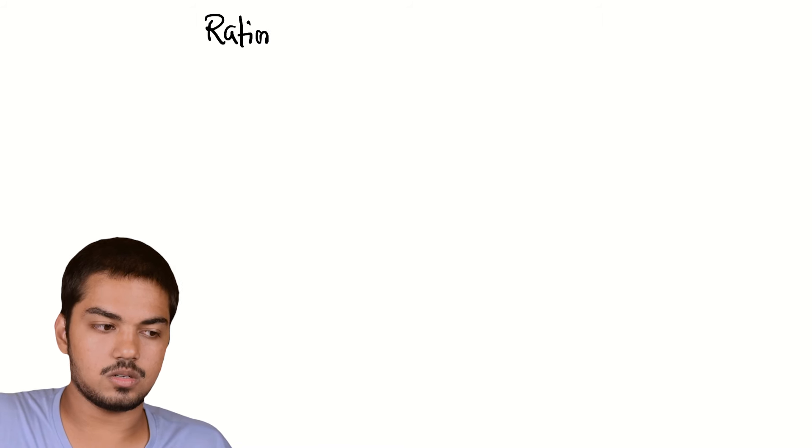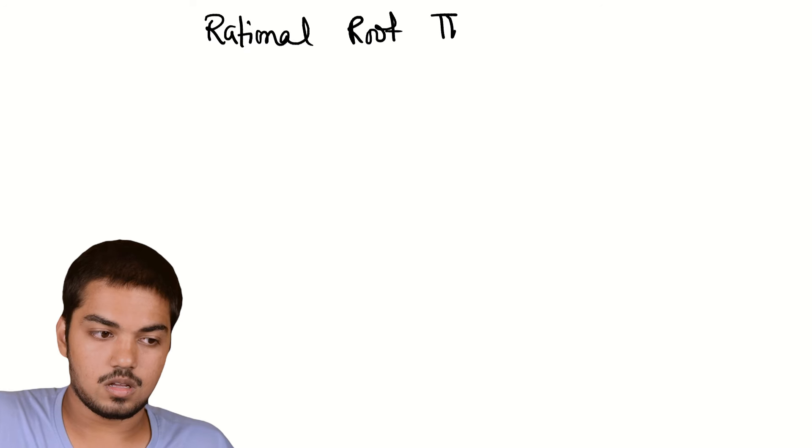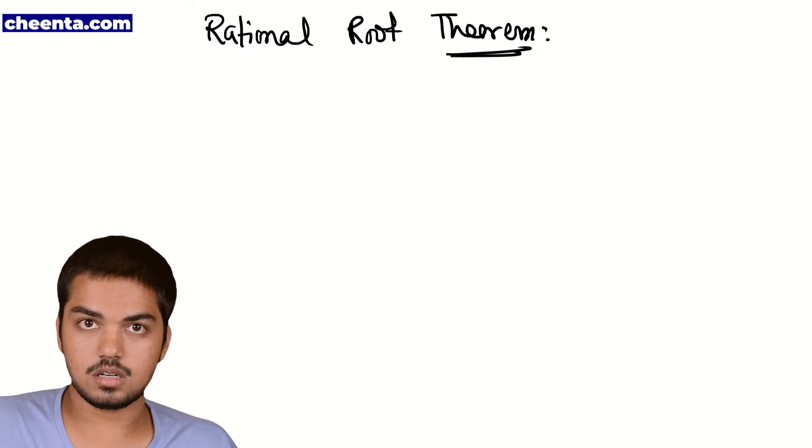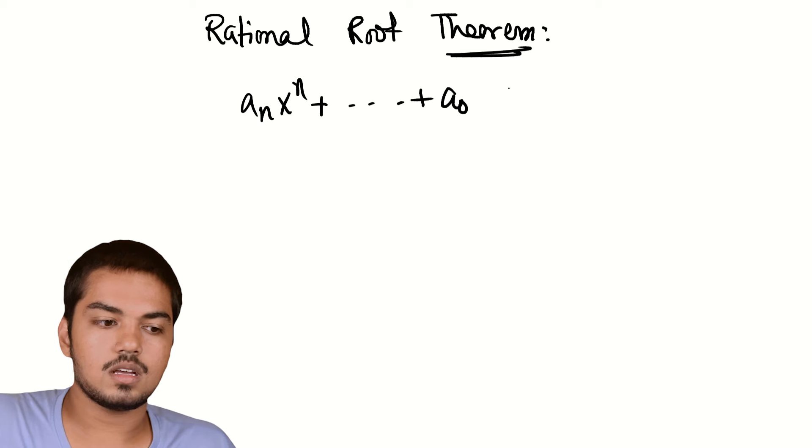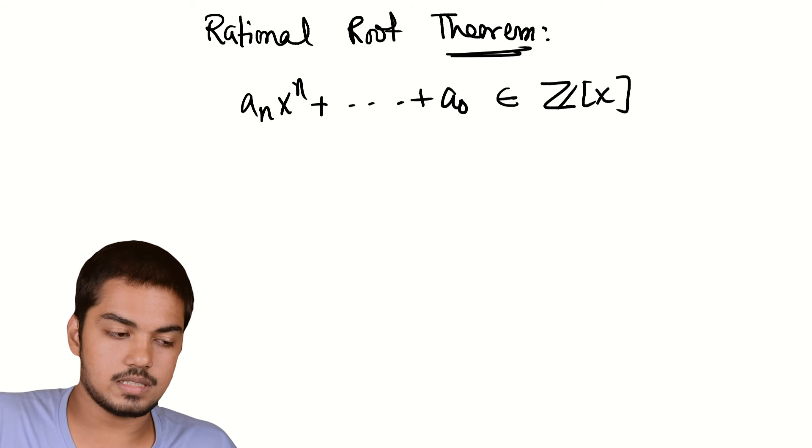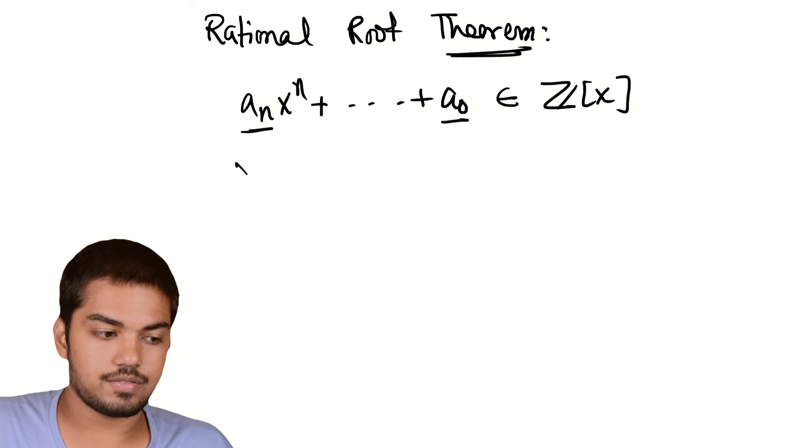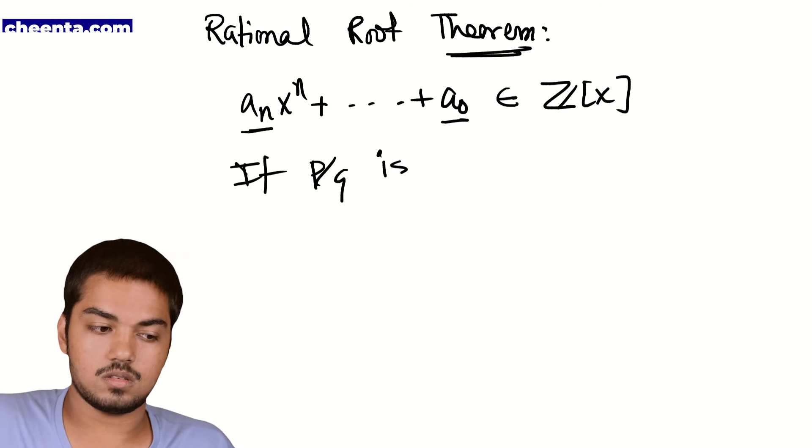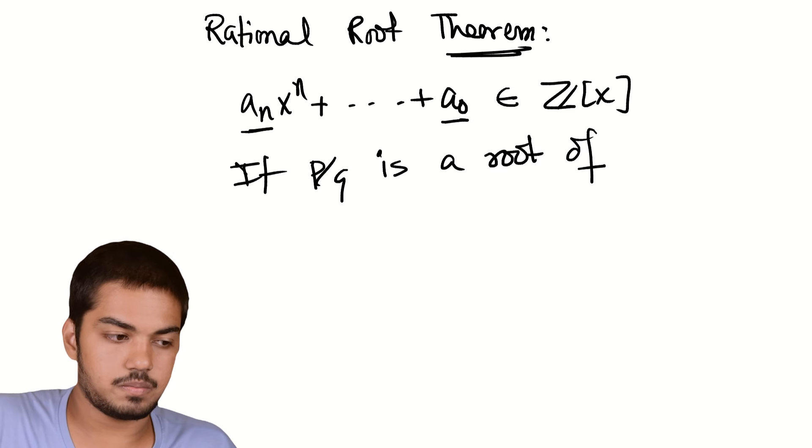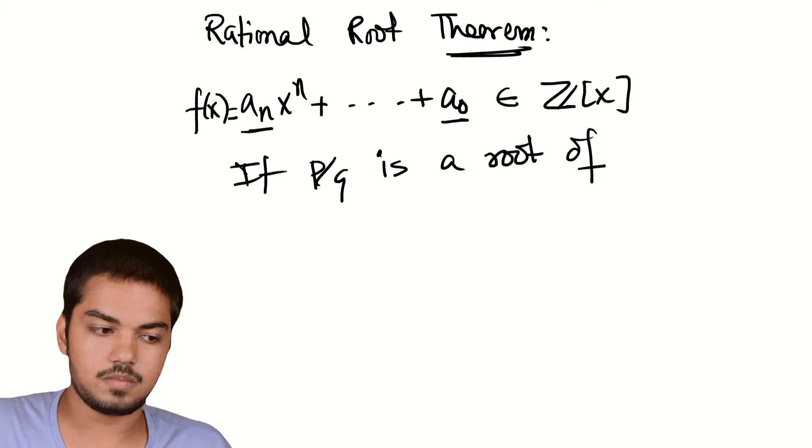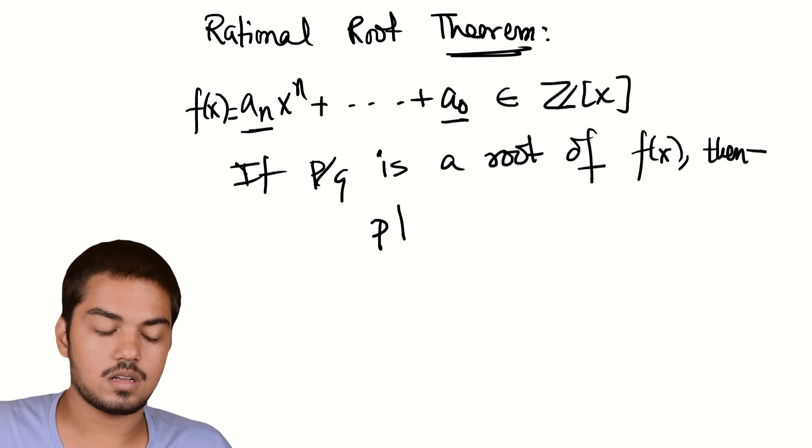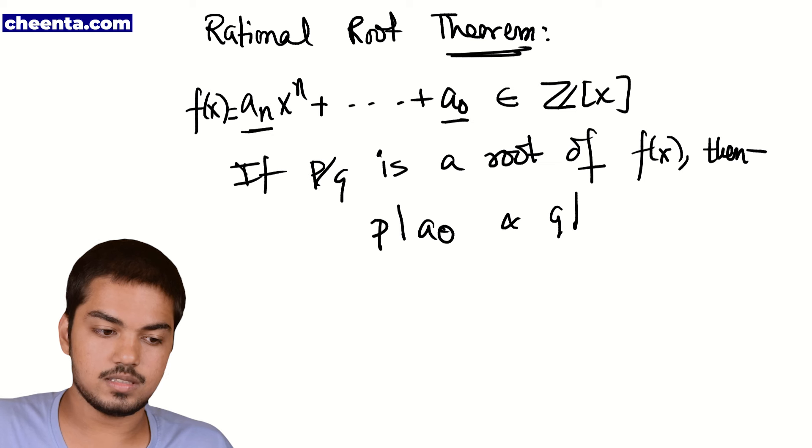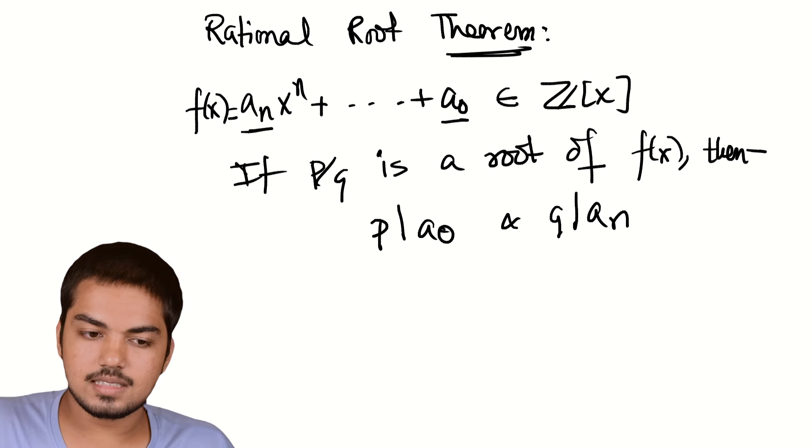Part B is significantly easier in that it follows directly as a result of the rational root theorem. For those of you who don't know, the rational root theorem is a very cool result about polynomials. which says that if an x^n up to a0 is an integer polynomial. Well, what that is is that all the ai's, an up to a0, are integers. And if p/q, a rational number, is a root of this polynomial, we would say f(x). Then, p divides a0, the constant term, and q divides an, the leading term.